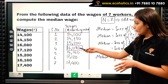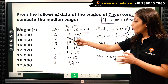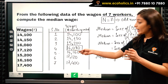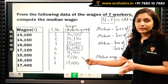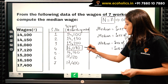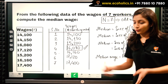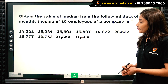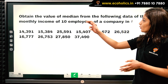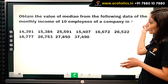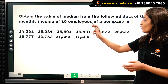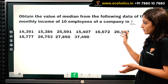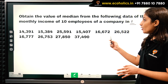We have three persons with wages less than 16,080 and three persons with wages greater than 16,080, confirming this is our median value. Now let's look at another example: obtain the value of median from the following data of the monthly income of 10 employees of a company, given in rupees.